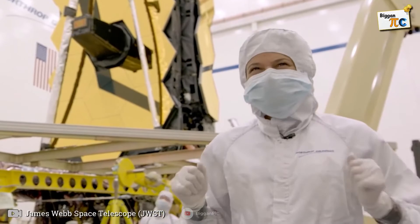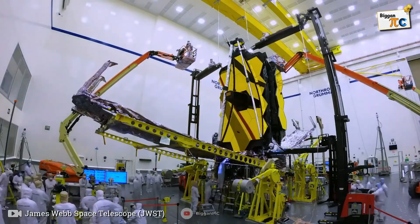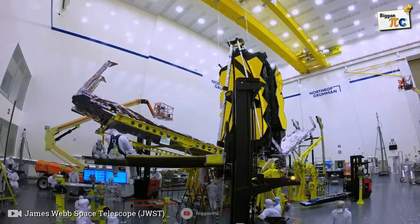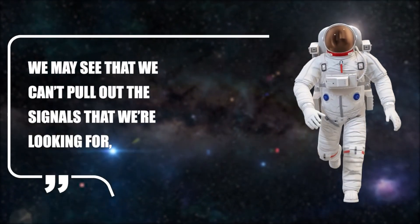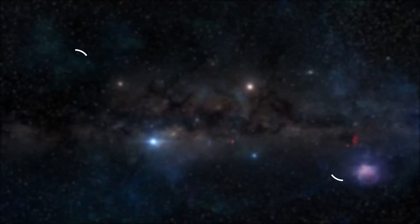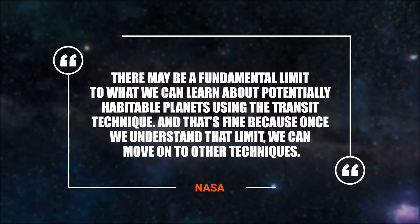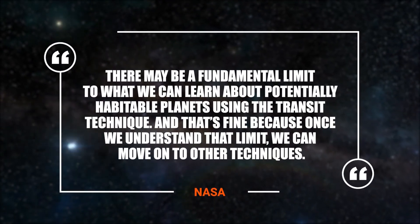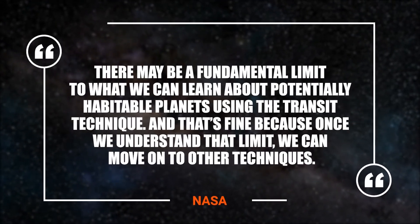Ultimately, the telescope will help scientists learn whether studying atmospheres in silhouette as planets transit their stars is likely to be a successful technique for detecting signs of life. We may see that we can't pull out the signals that we're looking for. There may be a fundamental limit to what we can learn about potentially habitable planets using the transit technique. And that's fine because once we understand that limit, we can move on to other techniques.